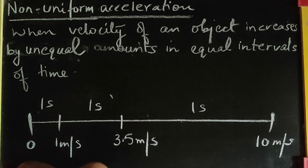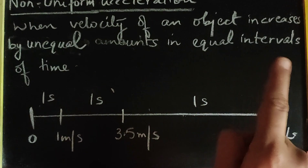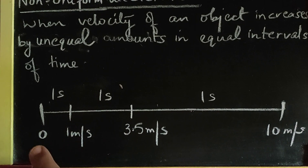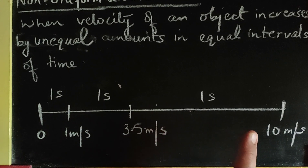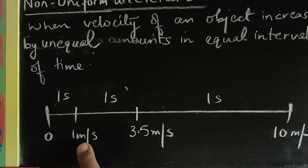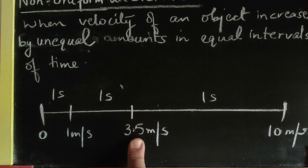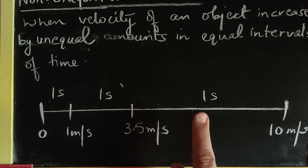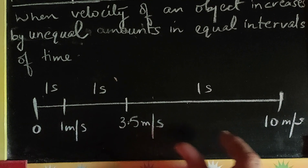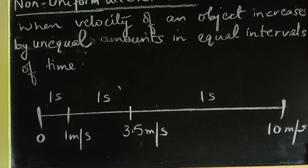Whereas in non-uniform acceleration, the velocity of the object increases by unequal amounts in equal intervals of time. Suppose after every 1 second the velocity is changing but at a non-uniform rate. Suppose the object started with 0, then after 1 second the velocity is 1 metre per second, after another 1 second the velocity increases to 3.5 metres per second, and after the next 1 second it jumps to 10 metres per second. So the change in velocity is not constant — this is non-uniform acceleration.